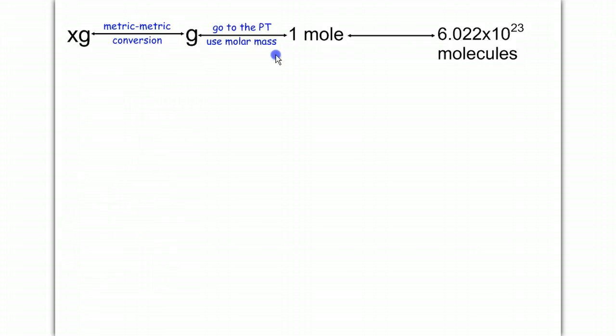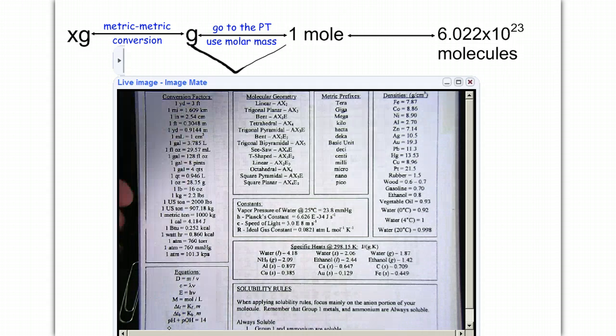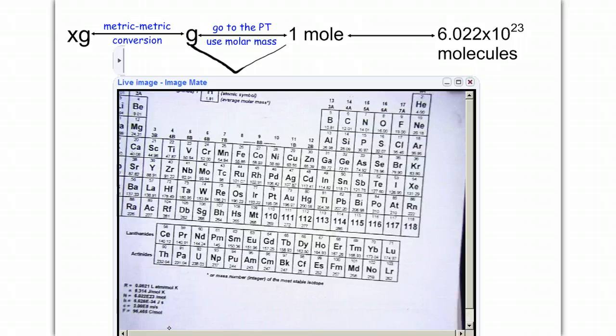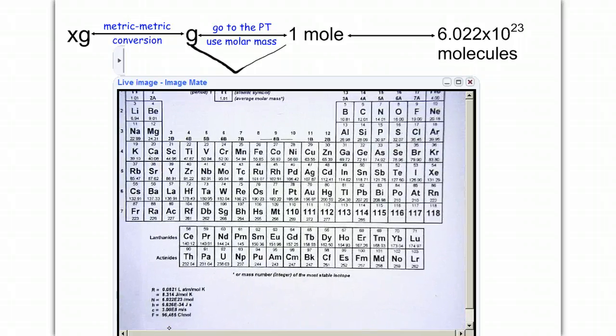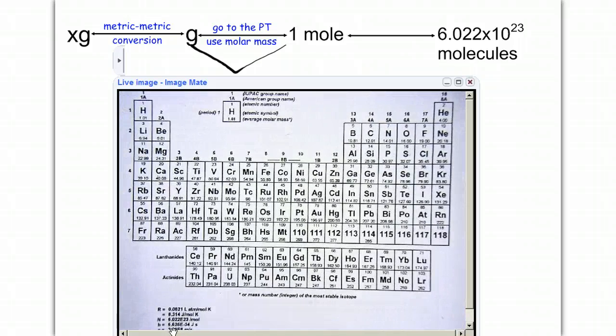then we can change from grams to moles using the periodic table and getting the molar mass. So anytime I ever want to convert between grams and moles, I always want to go to the periodic table, and I'm going to use on the periodic table the masses, the molar masses. I'm going to add them up. So what we like to say is if you need grams to change to mole, you go to the chart, which you may recall from our last chapter.